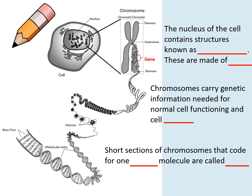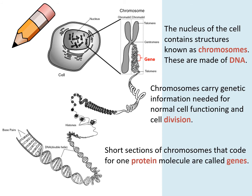From your previous knowledge in cell biology you should be able to fill in the blanks. The nucleus contains structures known as chromosomes and these are made up of DNA. Our DNA is two meters long so it needs to be wrapped so it can fit into that tiny nucleus. Chromosomes carry genetic information needed for normal cell functioning and for cell division, and short sections of chromosomes that code for one protein molecule are called genes. If you don't know that you'll need to go watch the DNA and cell division videos.